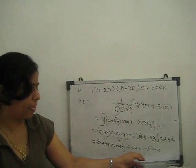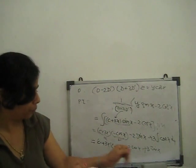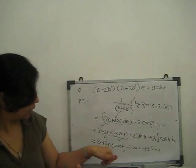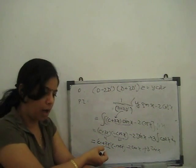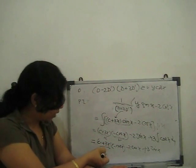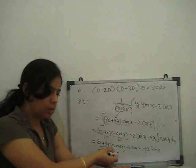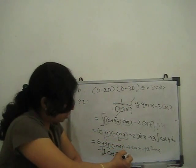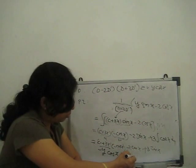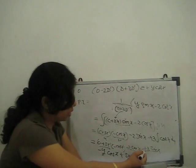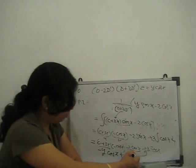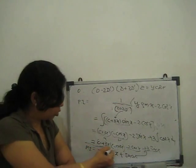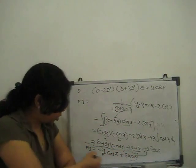After simplification, since c + 3x corresponds to y, the particular integral becomes: PI = −y·cos(x) + sin(x).